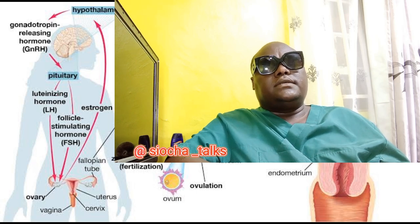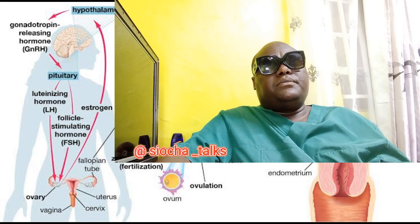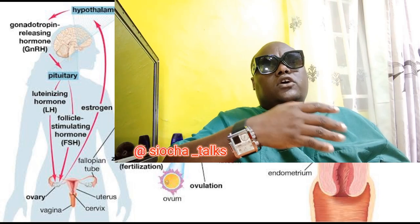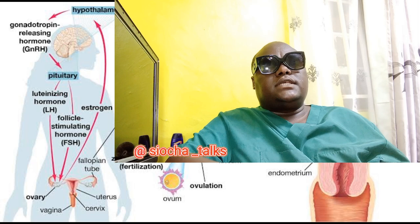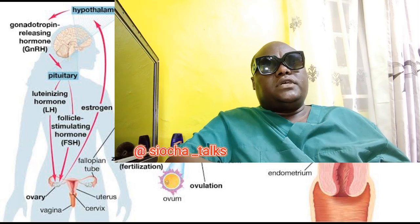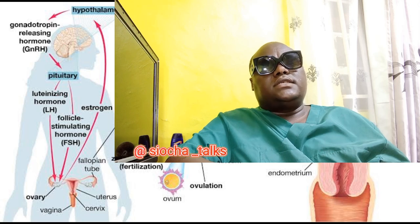Ovulation is a very important part of the menstrual cycle — it actually controls the menstrual cycle. It is necessary for conception to occur, so women who are trying to conceive may track their ovulation cycle to determine the best time for intercourse.